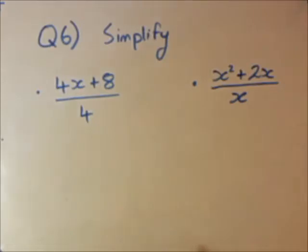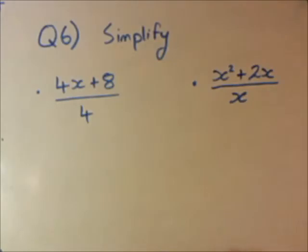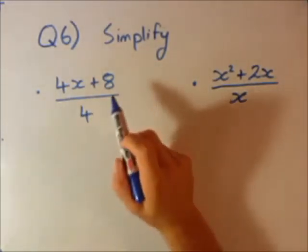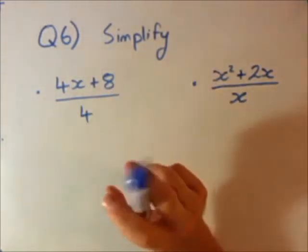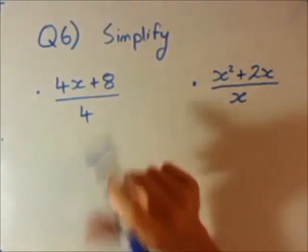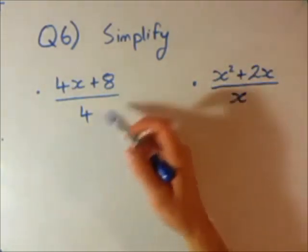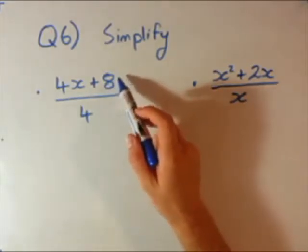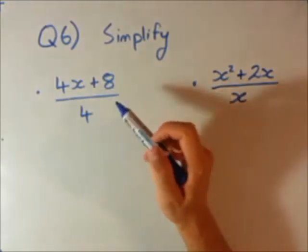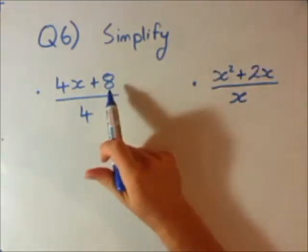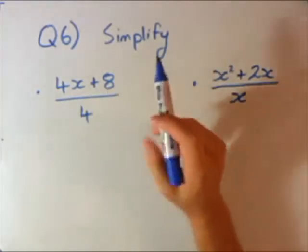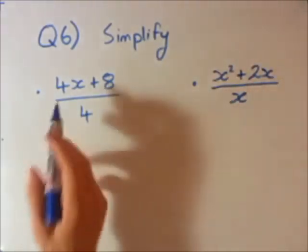Question 6. We're now looking at simplifying some fractions with some letters in there. They're looking pretty scary but they're not too bad. The key for these questions is to use our factorising skills from question 5 and factorise the top line, or the numerator. You've got the numerator on top and the denominator on the bottom. So we're going to factorise the numerator and then divide.